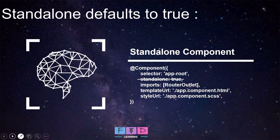Starting with Angular version 19, all components, directives, and pipes are now standalone by default. This means you will never need to write standalone true again. And what about your existing Angular code? When you update to version 19, the ng-update command automatically refactors your code, ensuring everything works seamlessly.